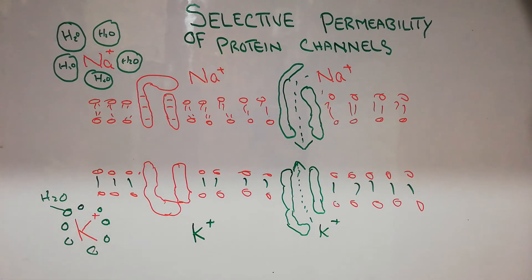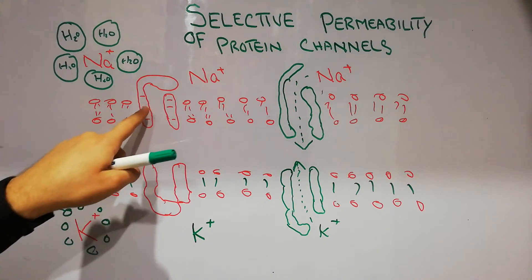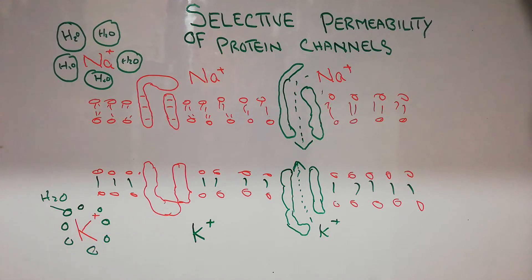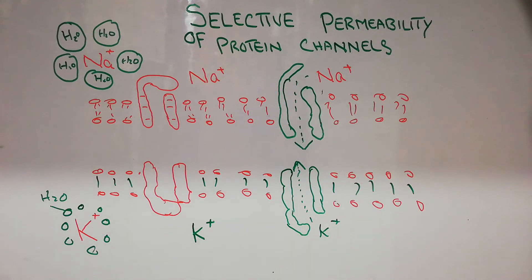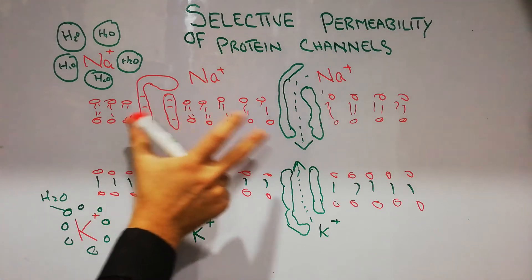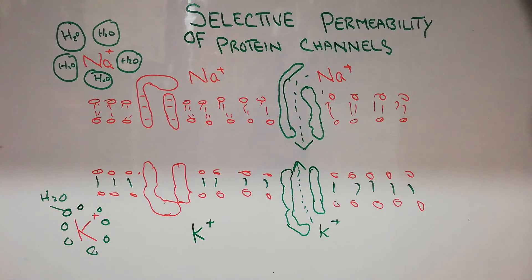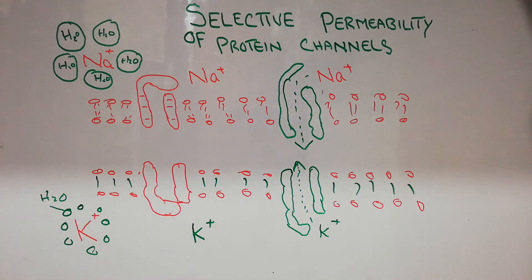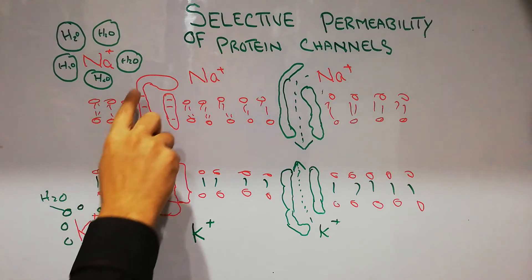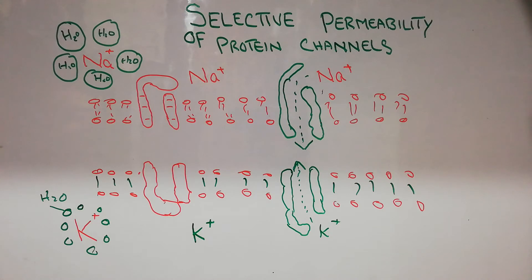Here we will take an example of two different types of protein channels: one is the sodium channel and the other is the potassium channel. This is a cell membrane, and here we have shown the sodium channels, and here we have shown the potassium channels. There are some differences between the channels as well as the ions — differences between the sodium channel and sodium ion, and between the potassium channel and potassium ion.